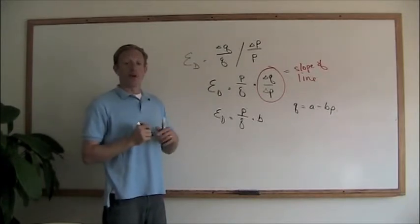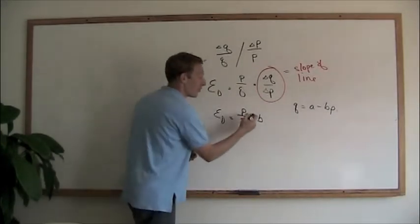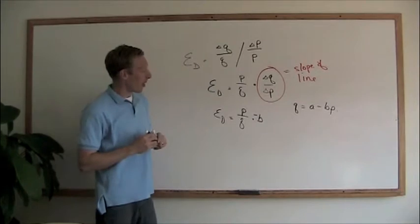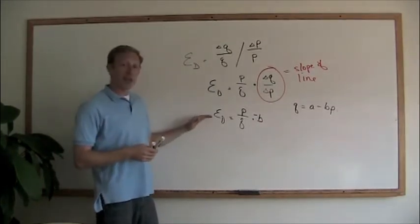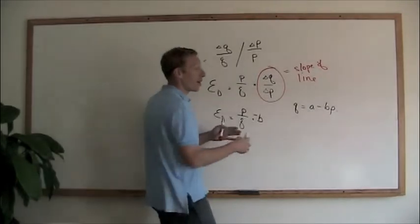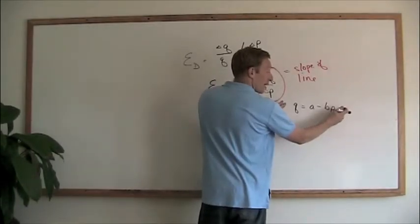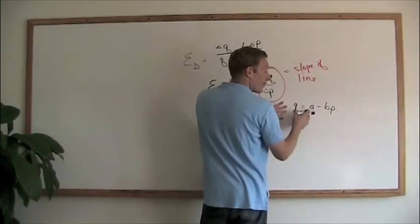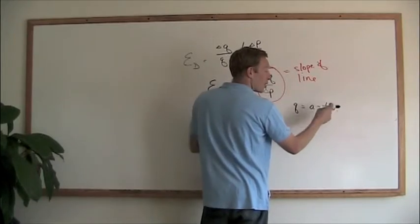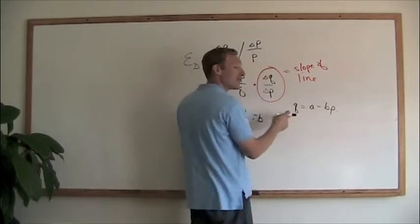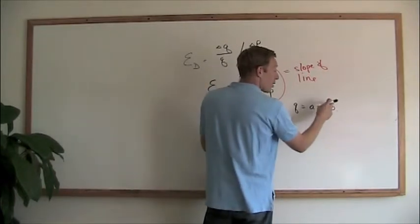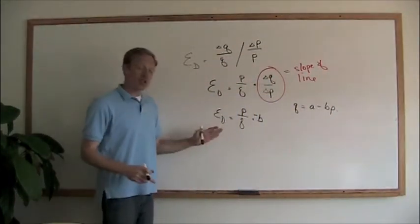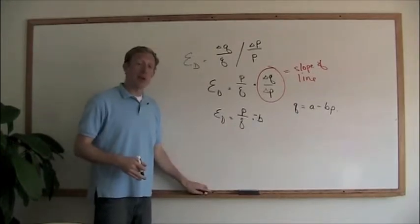Now, sorry, negative b. That's the slope of the line. So now, it's a simple way of calculating elasticity. If we have a linear demand curve and we're given data and we know what the price and the quantity are at any given point, and we know the slope of the line, we can drop all that information in to figure out the elasticity of demand.